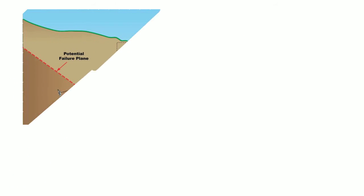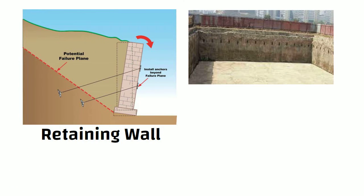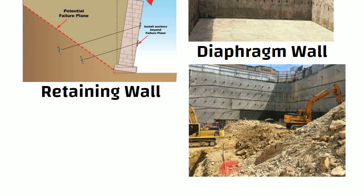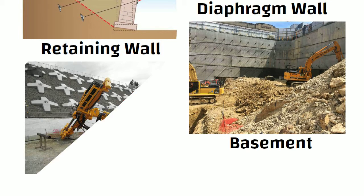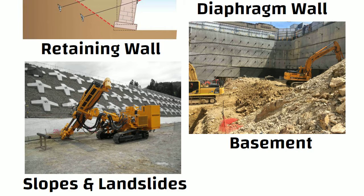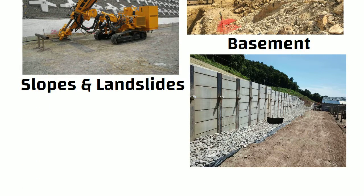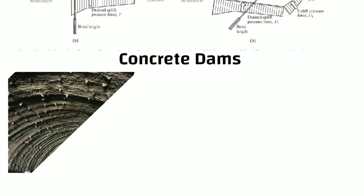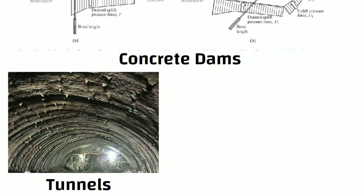Rock anchors are used in retaining wall and diaphragm wall. They are also used for resisting uplift forces on basements and other foundations, for stabilizing slopes and landslides, to provide tiebacks in bridges, for strengthening masonry and concrete dams, and to secure surfaces in mines and tunnels or to secure structures against forces from wind or vibrating machinery.